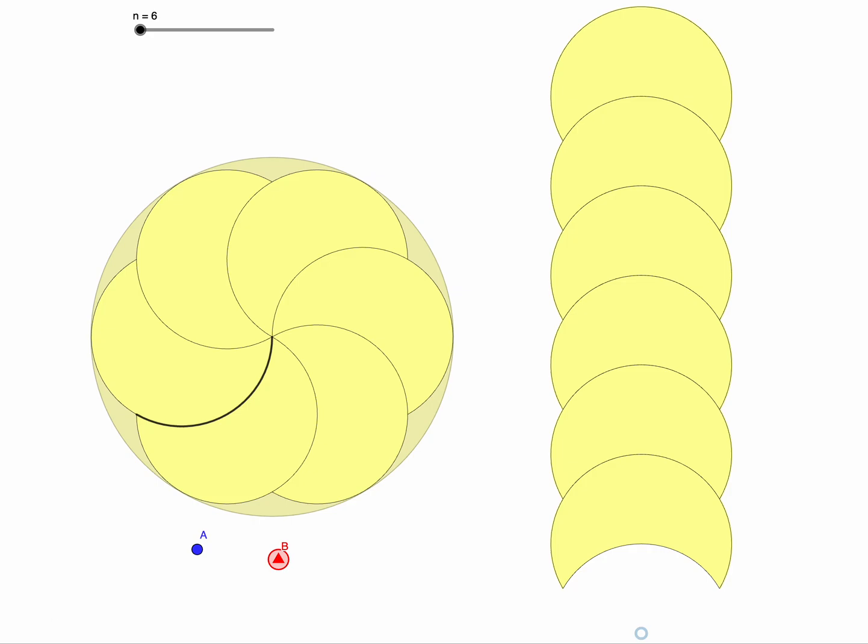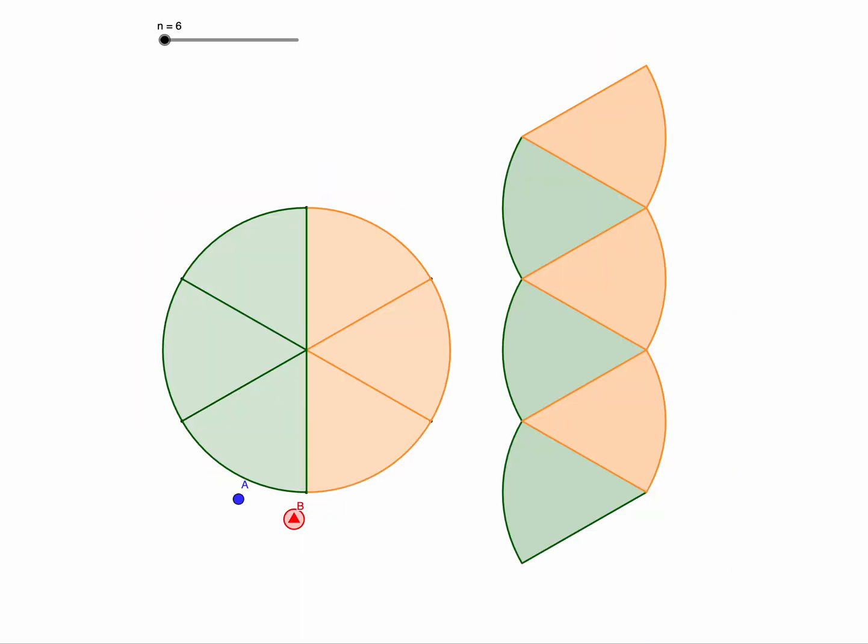Hello, just another video, a screencast, which is talking about this decomposition of the disk into loons. In particular, what I want to do is compare it to a traditional way of decomposing a disk into wedges, because this is another way of talking about the area of a circle. In some ways, this is where I started all this many years ago.